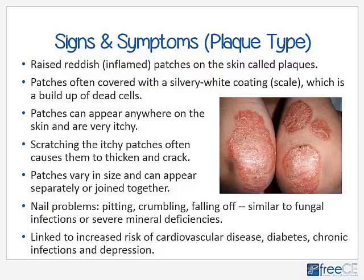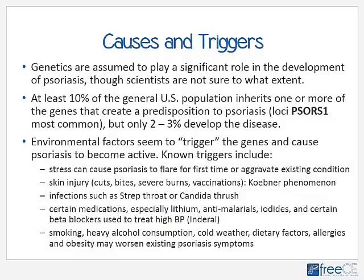Psoriasis of the feet and hands usually involves nail problems — pitting, crumbling, and falling off — which looks very similar to a fungal infection or can mimic mineral deficiencies. Psoriasis in general is linked to an increased risk of cardiovascular diseases, diabetes, chronic infection, and depression — the latter not due to hormonal imbalance per se, but due to the condition's impact on appearance and lifestyle, similar to severe acne or other disfiguring skin problems.